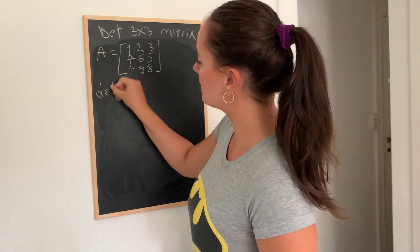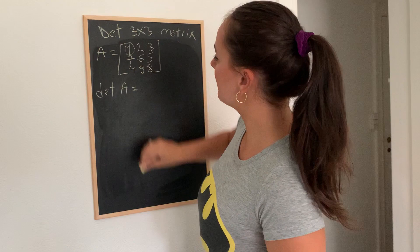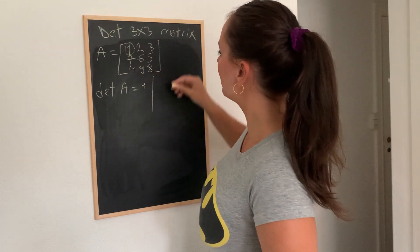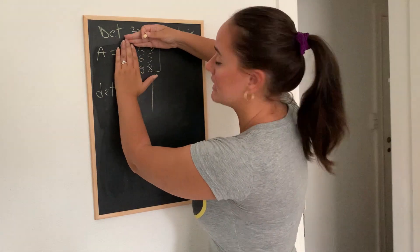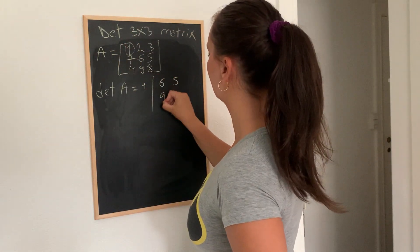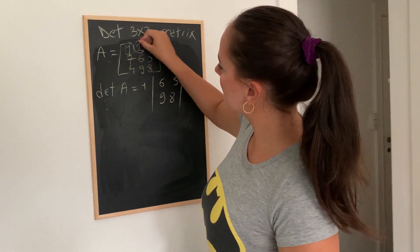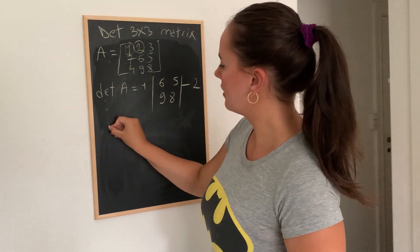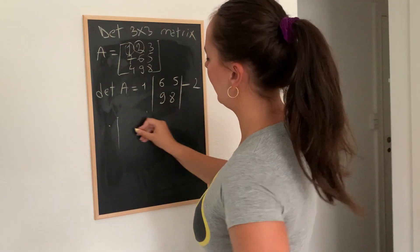So determinant of A would be the first element here, 1, multiplied by this matrix. So 6, 5, and 9, 8 minus the second element here, 2, which is going to be multiplied, 7, 5, 4, 8.